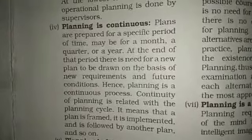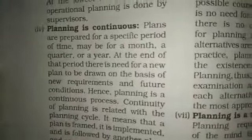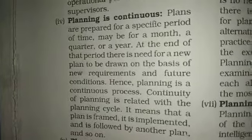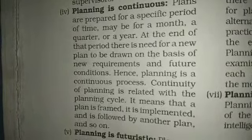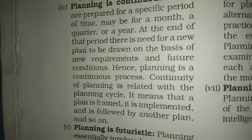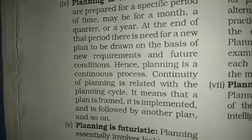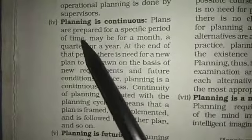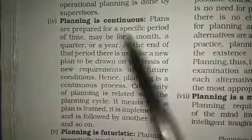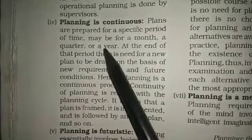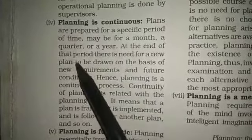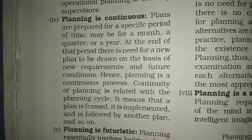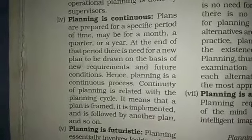The next feature is that planning is a continuous process. As long as the business exists, planning has to be done. One year you accomplish a goal and earn profit; the next year you strive for more. Plans are prepared for a specific time period — a month, quarter, or year — and at the end of that period, a new plan is needed based on new requirements and future conditions.